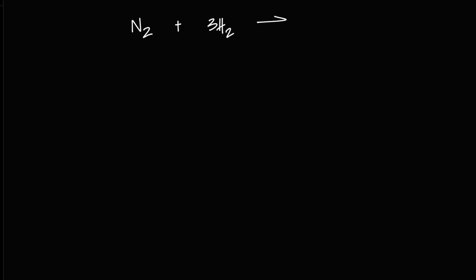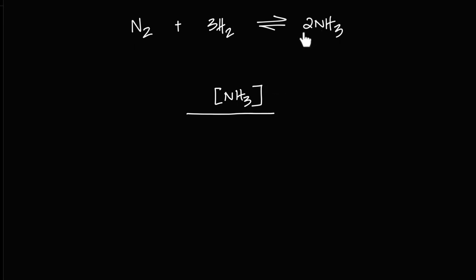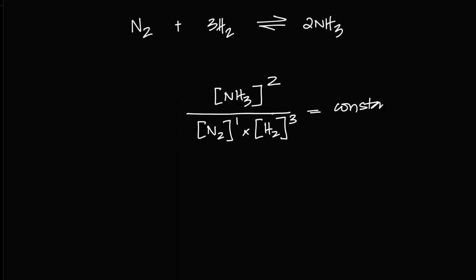Let's talk about the Haber process, which is N₂ + 3H₂ ⇌ 2NH₃. The equilibrium law states that the ratio of the right-hand side concentrations raised to their stoichiometric coefficients over the left-hand side is a constant. That means [NH₃]² over [N₂]¹ × [H₂]³ — no matter how you do it, that ratio of concentrations raised to stoichiometric powers is always going to be a constant.